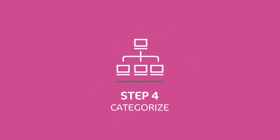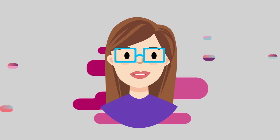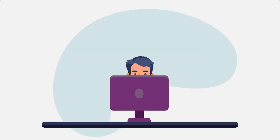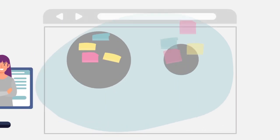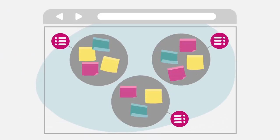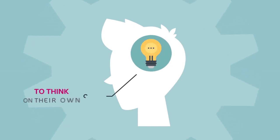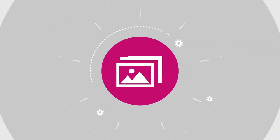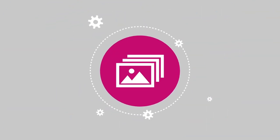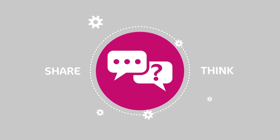Step four: Categorize. Welcome to step four where it's all about categorization. Start by dividing the students into groups on your digital platform and ask them to group the words or expressions by categories and give a label to each set. This is where they are given the independence to think on their own and implement it in their categorization activity. After that, ask students to send or share a photo of their work.